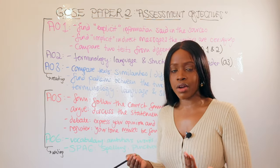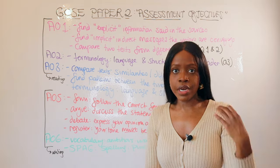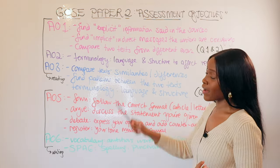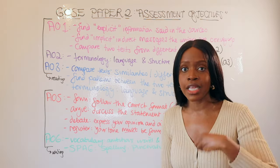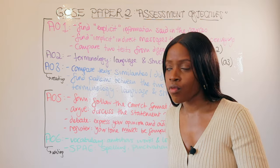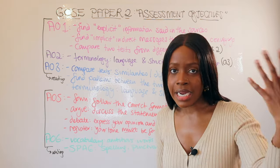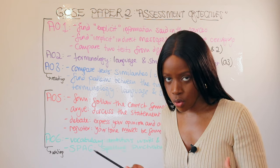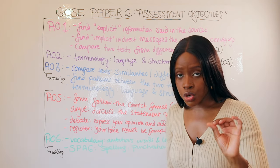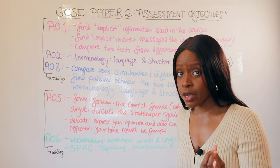So now, when you get marked feedback from your teacher, you'll know what to do. If they say improve AO2, that means in question 3 you're not using enough language techniques or you're using the wrong ones. If they say improve AO1, that means you need to work on finding explicit and implicit information. That covers AO1, AO2 and AO3 — all tested in Section A, questions 1 to 4.